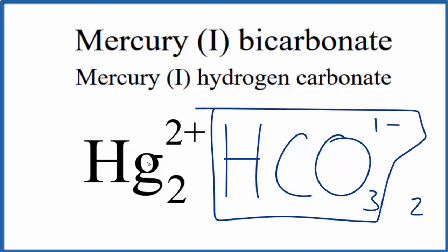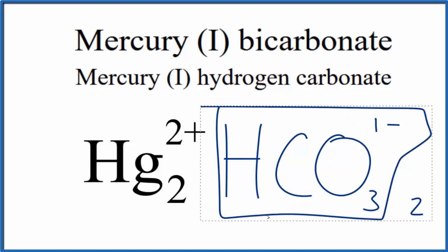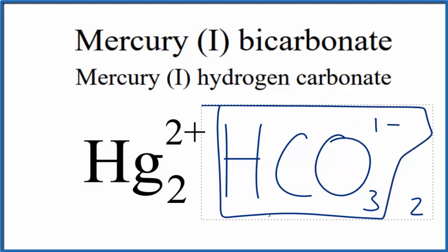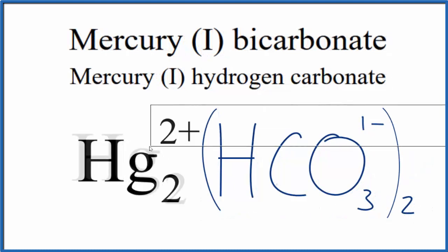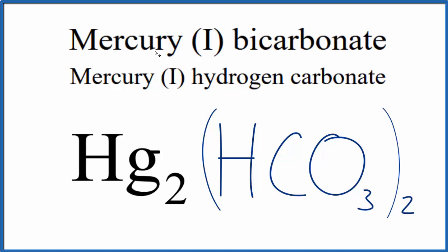We do need to replace this with parentheses, though, since we have two of these bicarbonate ions. Let's remove these symbols, and this is the formula for mercury (I) bicarbonate, also called mercury (I) hydrogen carbonate: Hg2(HCO3)2. We have two of these bicarbonate ions here.